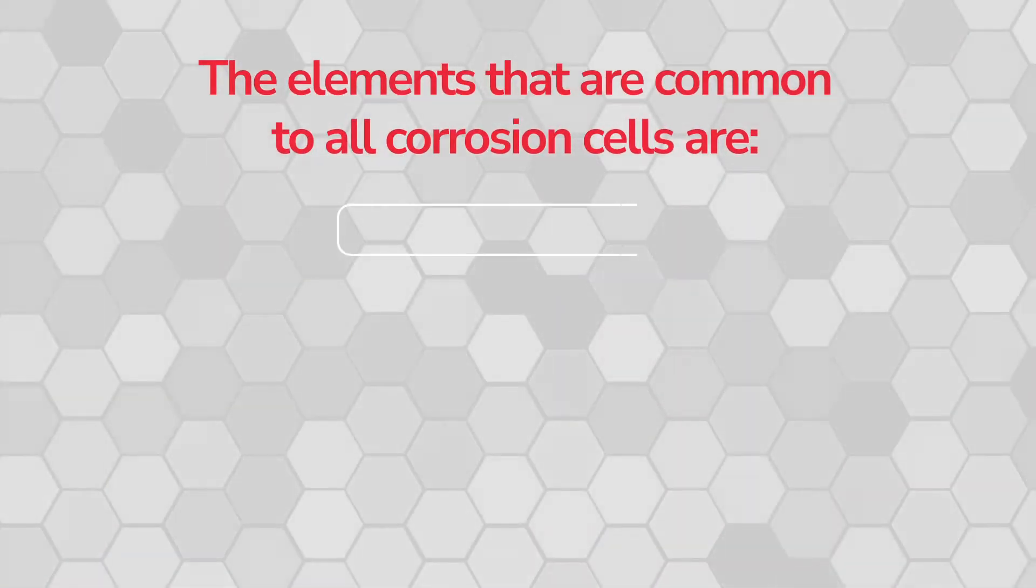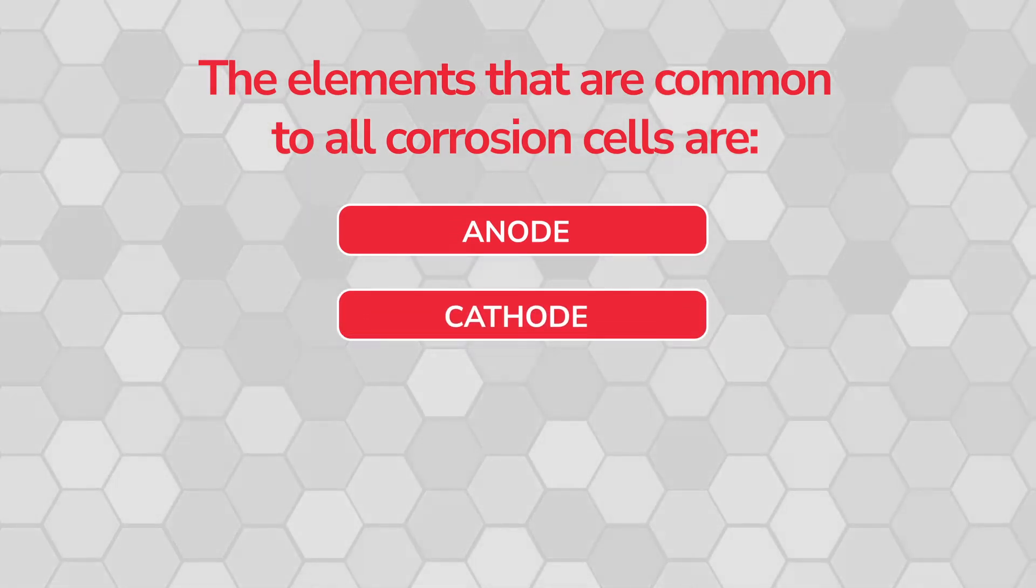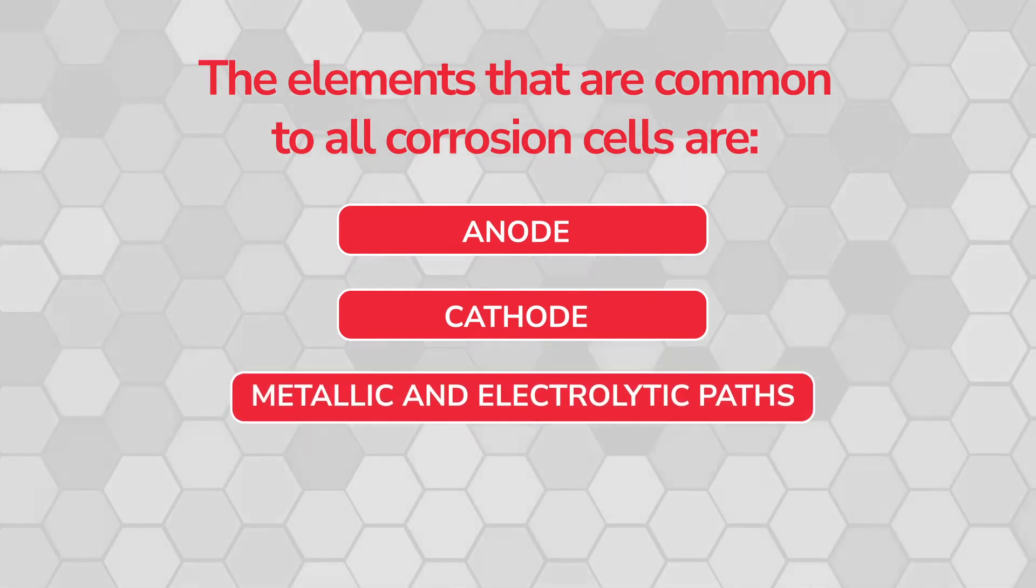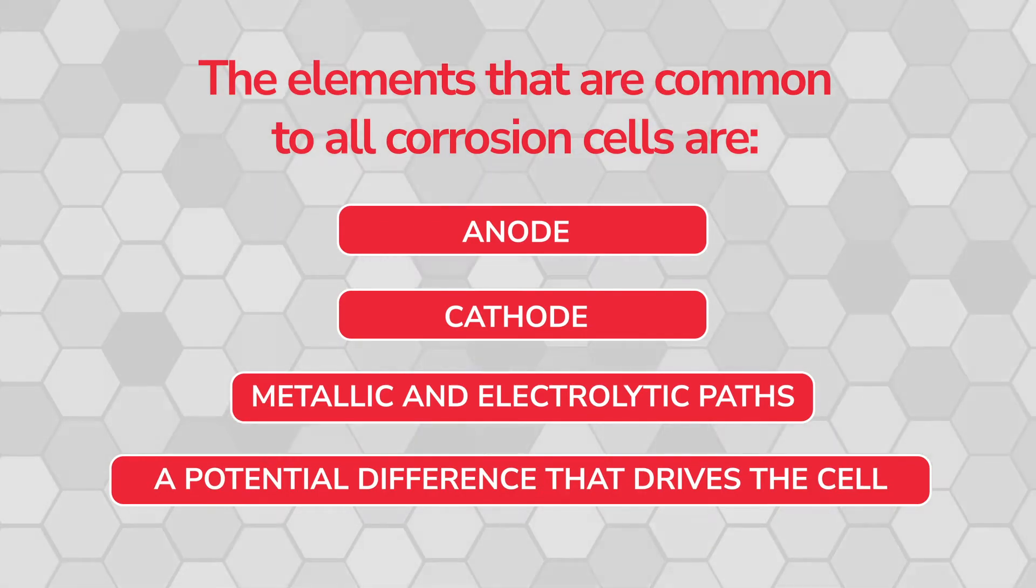The elements that are common to all corrosion cells are an anode where oxidation and metal loss occur, a cathode where reduction and protective effects occur, metallic and electrolytic paths between the anode and the cathode through which electronic and ionic current flows, and a potential difference that drives the cell.